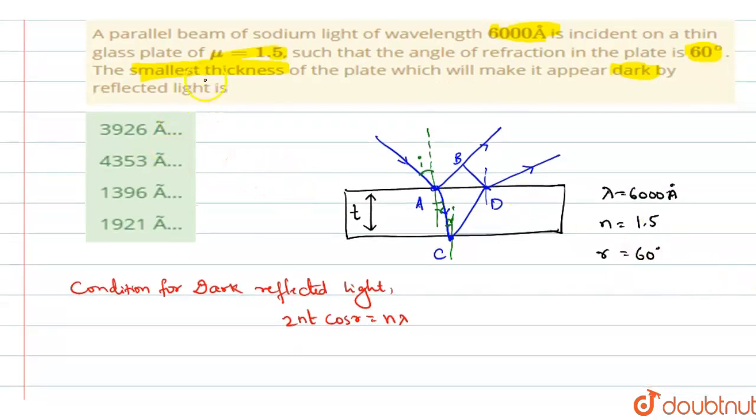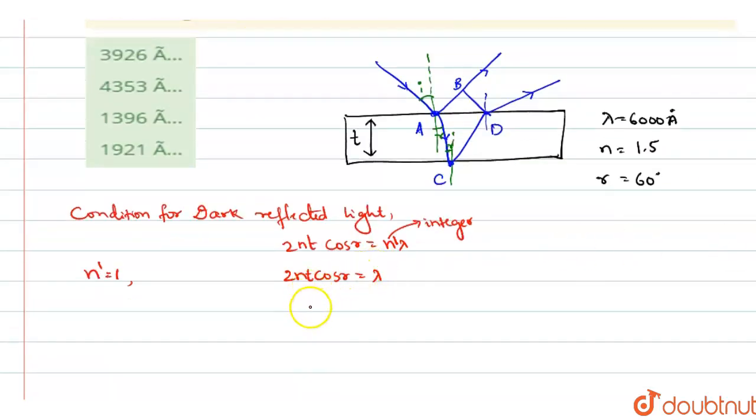Since they are asking it with respect to the smallest thickness, so smallest thickness means the very first value that is N is equal to 1, you will take. So that becomes 2NT cos R is equal to lambda. So this N what we are writing here is the refractive index. This N is an integer. So let us write this as N dash to avoid confusion. So N dash is equal to 1. Now you are supposed to find the thickness. So T will be equal to lambda by 2N cos R. And so T will be equal to 6000 into 10 power minus 10 divided by 2 into 1.5 into cos 60.